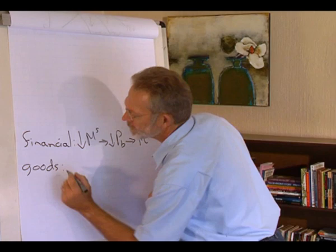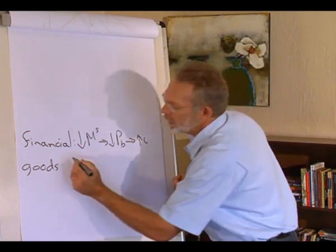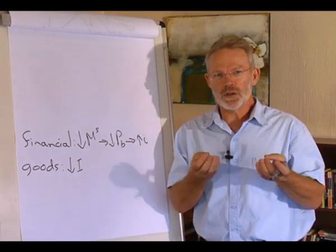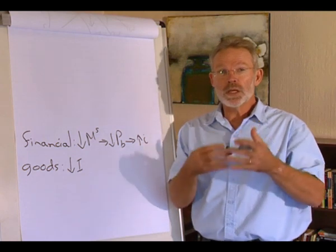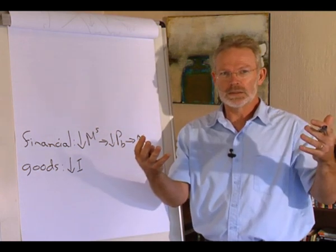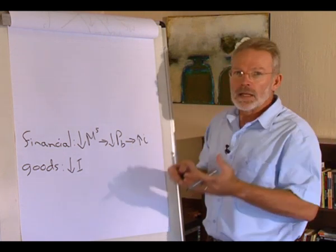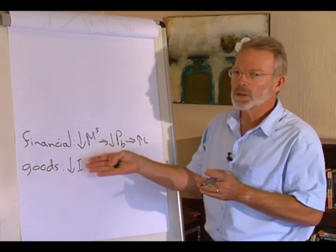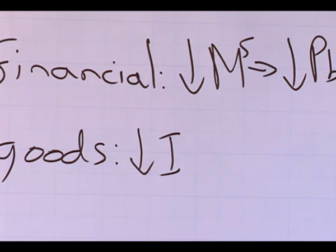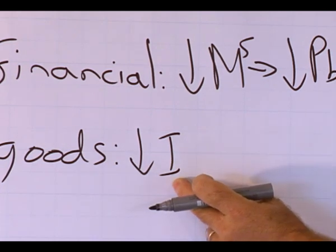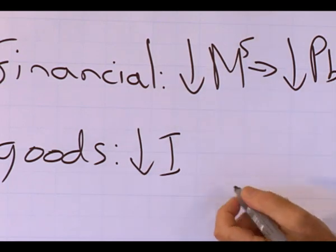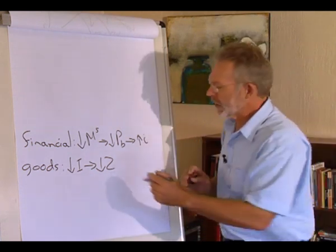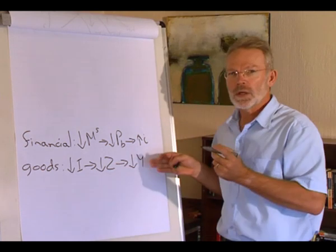Investment spending is part of the goods market, so we move over to the goods market. If the interest rate increases, investment spending will decrease. Investment is the addition to capital stock — in other words, building more factories. If the interest rate goes up, fewer investment projects will be profitable, so investment will decrease. If we build fewer factories, demand for goods and services in the economy will decrease, and we produce less.